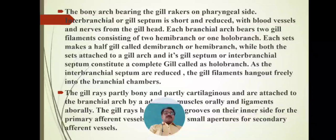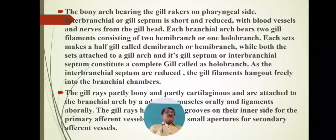Each branchial arch bears two gill filaments consisting of two hemibranchs or one holobranch. Each set makes a half gill called a demibranch or hemibranch — 'hemi' meaning half. When both these hemibranchs form a complete set attached to a gill arch and gill septum, they constitute a complete gill or whole gill, which is called a holobranch.